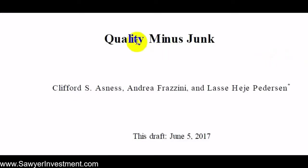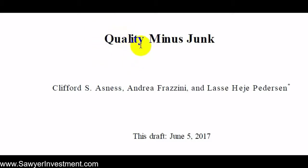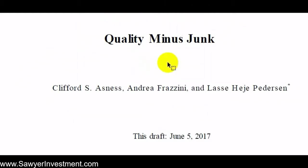In this video we're going to be going through a paper called Quality Minus Junk by Asness, Frazzini, and Pedersen. Historically and in prior academic research, companies that exhibit characteristics of quality — for instance, profitability, better balance sheets, more growth, less volatility of earnings and price — tend to outperform companies with lower levels of those characteristics. The authors here are going to explore this occurrence in the same vein that Fama-French did with value versus growth, big minus small, but in this case it's quality minus junk.